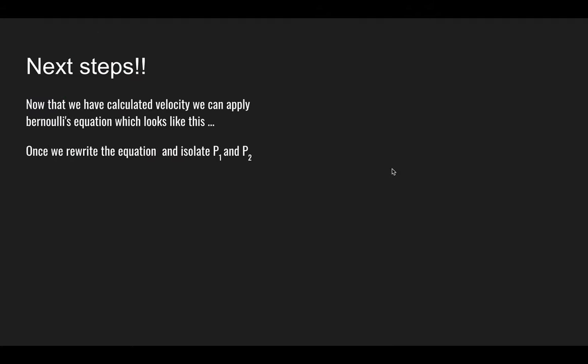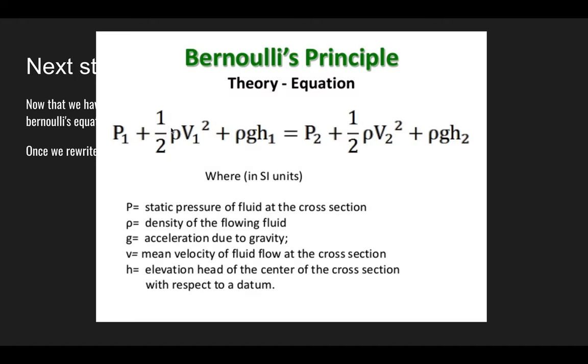So for the next step, we already calculated velocity. So now we can start to apply Bernoulli's equation, which looks something like this. For the sake of time, I'm not going to show you how to isolate the variables or the steps involved. But basically what you have to do is get this P1 and this P2 on one side of the parenthesis and everything else on the other side. And then just eliminate this PGH and the PGH on this side. Just don't even use them.